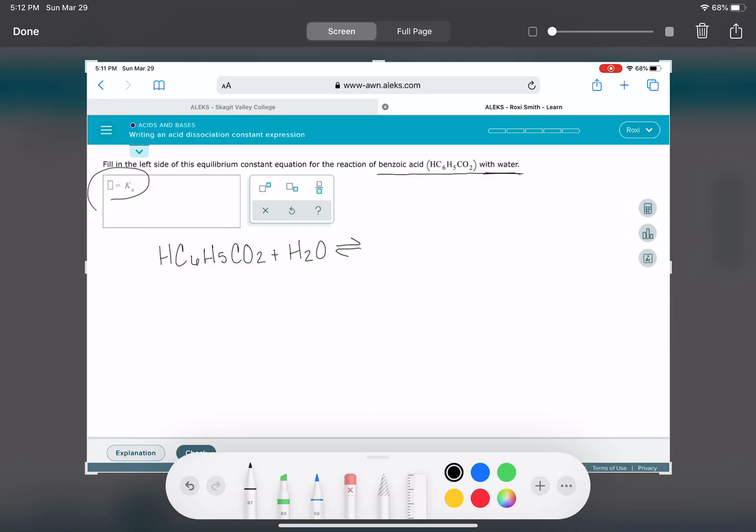And because this is an acid, and we know it's an acid because, first of all, it gave us Ka. And second of all, because it's using the word acid up here. When we know it's an acid, we know one of these products is going to be H3O+. Plus, we have to figure out what that last product is.